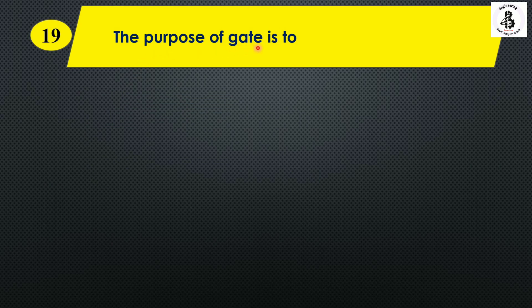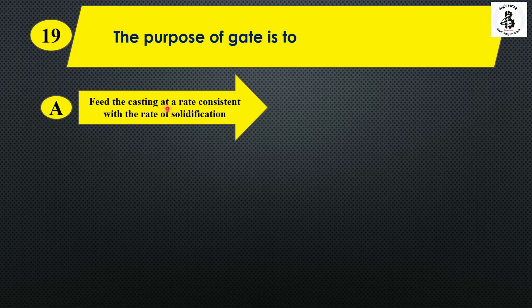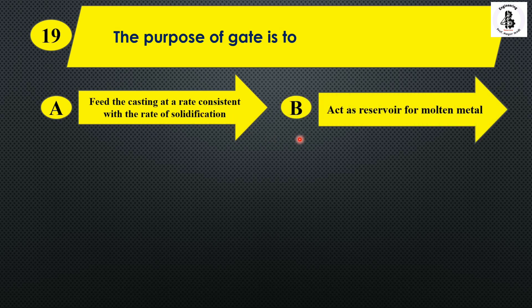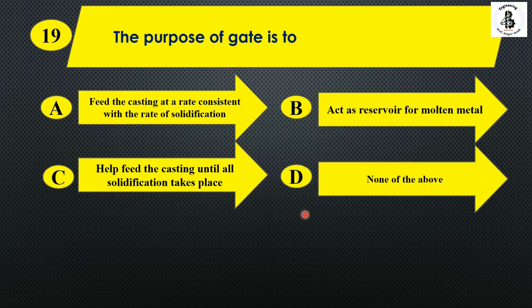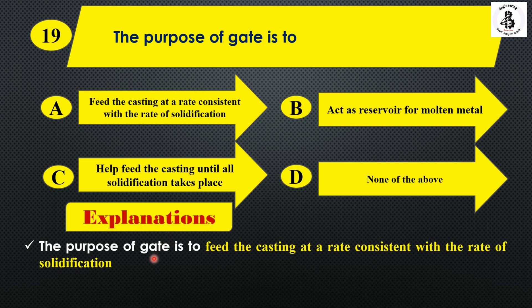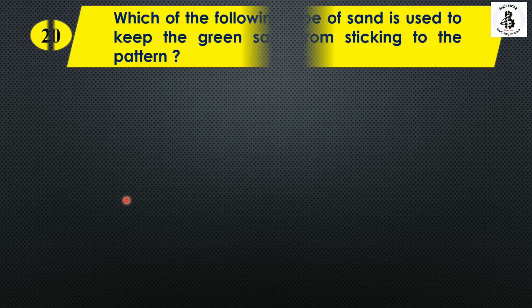The next question: the purpose of the gating system is to — option A: feed the casting at a rate consistent with the rate of solidification; option B: act as a reservoir for molten metal; option C: help feed the casting until all solidification takes place; option D: none of the above. The gating system feeds the casting at a rate consistent with solidification, maintaining directional solidification to reduce defects. The right answer is option A.